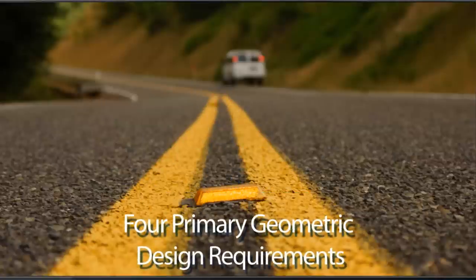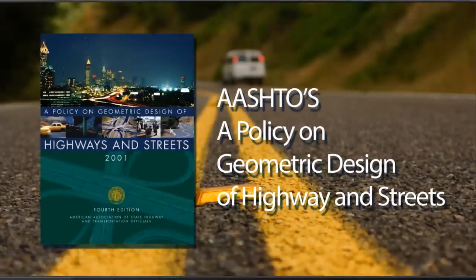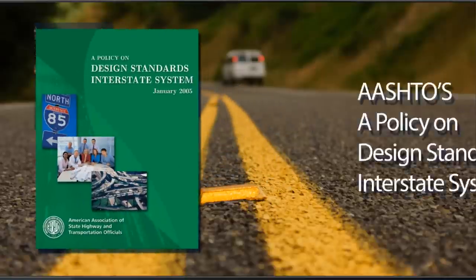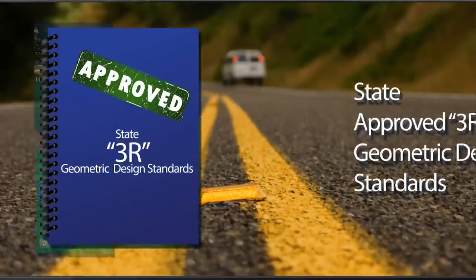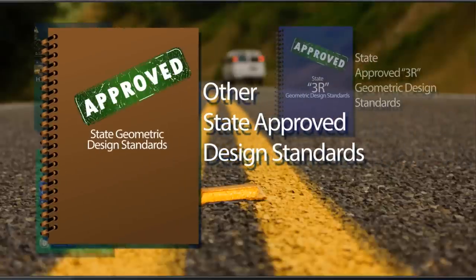The four primary geometric design requirements that may apply to your highway project are: AASHTO's A Policy on Geometric Design of Highways and Streets, commonly referred to as the Green Book — maintained by the American Association of State Highway and Transportation Officials, or AASHTO; AASHTO's A Policy on Design Standards Interstate System; your state's approved 3R geometric design standards; and other state-approved design standards.